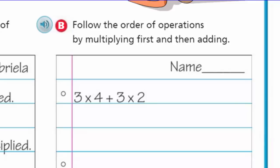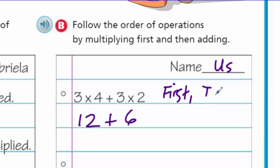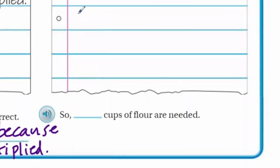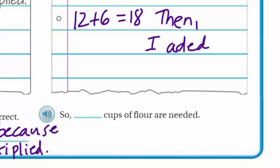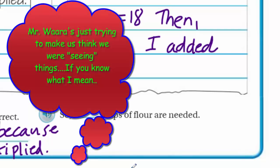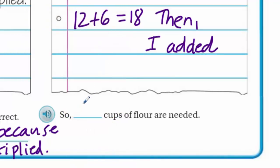Let's put our name on there — it's not just me, we're together, fifth graders rock. Three times 4 plus 3 times 2 means we multiply first: 3 times 4 is 12, plus 3 times 2 is 6. First I multiplied, then I'm taking 12 plus 6, which equals 18. Then I added. So that means 18 cups of flour are needed.